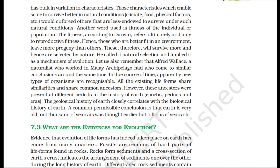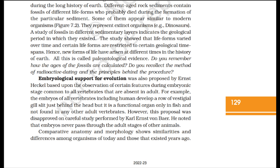What are the evidences for evolution? Evidence that evolution of life forms has taken place on Earth has come from many quarters. Fossils are remains of hard parts of life forms found in rocks. Rocks form sediments, and a cross-section of Earth's crust indicates the arrangement of sediments one over the other during the long history of Earth. Different-aged rock sediments contain fossils of different life forms. A study of fossils in different sedimentary layers indicates the geological period in which they existed. New forms of life have arisen at different times. All this is called paleontological evidence.